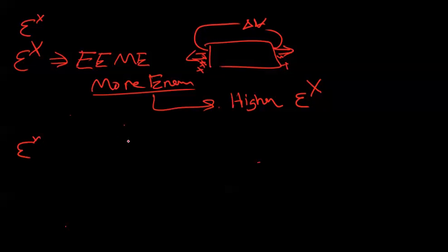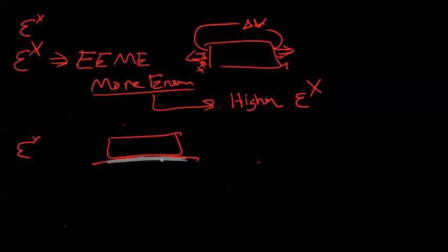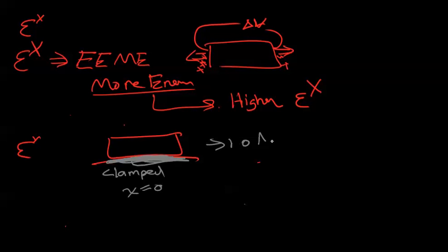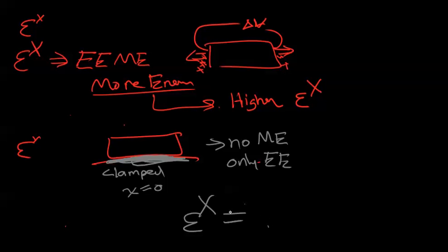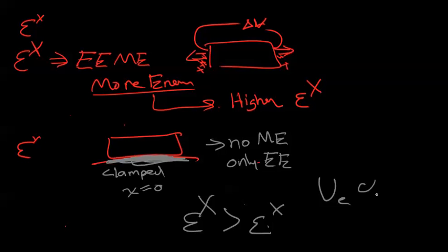In the clamped condition, we have glued the material down so the strain is zero — it does not move at all. We are storing no mechanical energy, only electrical energy. Because we're not storing mechanical energy, the permittivity is going to be smaller. So permittivity at constant stress is greater than permittivity at constant strain, because the total energy drawn from the power supply is greater in the free case and is directly proportional to epsilon.